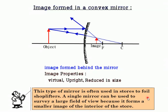A convex mirror is often used in stores to deter shoplifters — a single mirror surveys a large field of view because it forms a smaller image of the store interior. Please practice drawing these ray diagrams. You can replay this video if needed. Good luck, and you can come and see me during school hours. Thank you and bye!